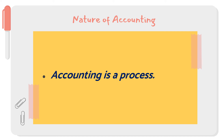Next, accounting is a process — a process in the sense that it refers to the method of performing any specific job step by step according to the objectives or targets. As we discussed, accounting is the process of identifying, measuring, and communicating, meaning there is a definite process we follow in accounting.